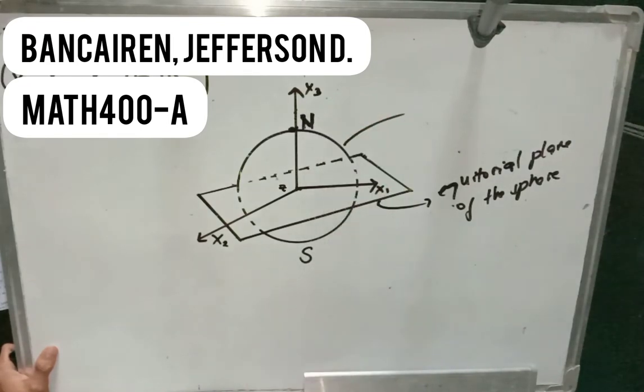And on the other hand, on the bottom of the sphere, which is the opposite, we have one point also which is called the South Pole. And we denote it as the capital letter S.